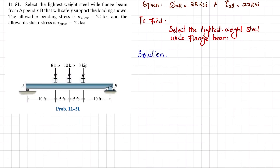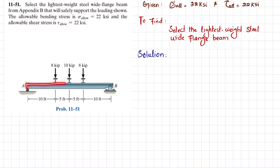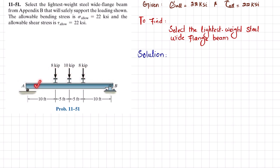Welcome back. Problem 11-51: select the lightest weight steel wide flange beam from Appendix B that will safely support the loading shown. The allowable bending stress is 22 ksi and the allowable shearing stress is 22 ksi. This is a simply supported beam acted upon by three concentrated loads: 8 kips, 10 kips, and 8 kips at various points.